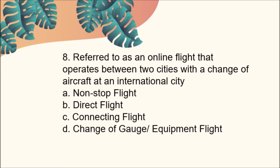Number eight: Referred to as an online flight that operates between two cities with a change of aircraft at an international city. A, Non-stop flight; B, Direct flight; C, Connecting flight; D, Change of Gauge or Equipment flight. The answer is Letter B, Direct flight.